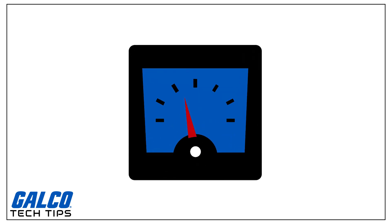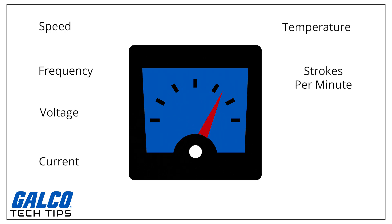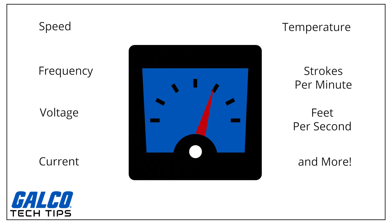Panel meters can display speed, frequency, voltage, current, temperature, strokes per minute, feet per second, and more.